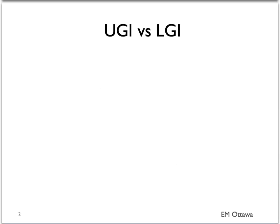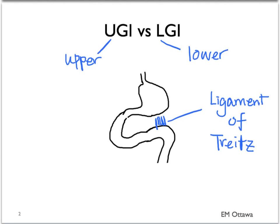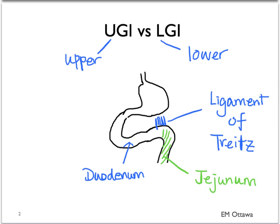In patients with a potential GI bleed, we usually divide it up into upper and lower GI bleed. The dividing line is the ligament of Treitz, which extends from the small intestine between the duodenum and the jejunum. Any bleeding that is proximal to that ligament is classified as an upper GI bleed. Any bleeding distal is lower.